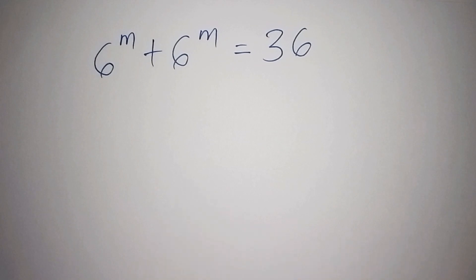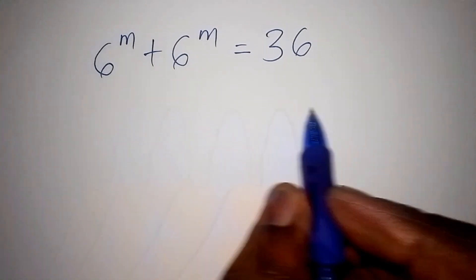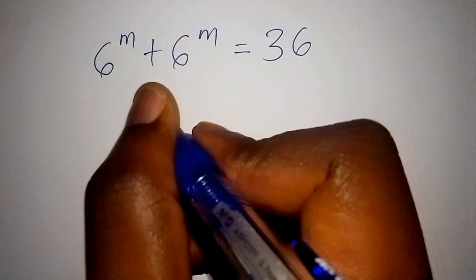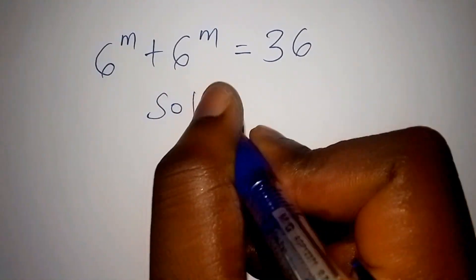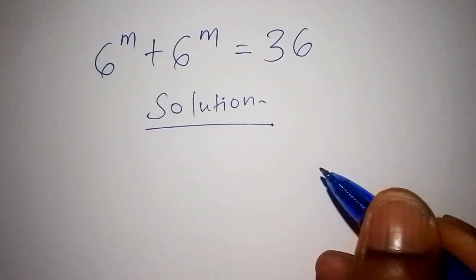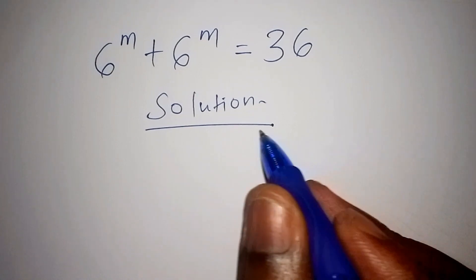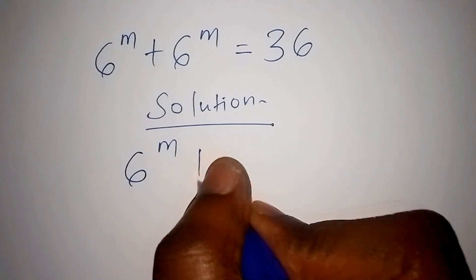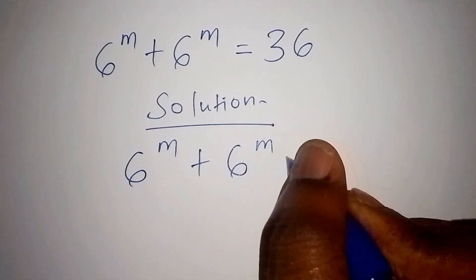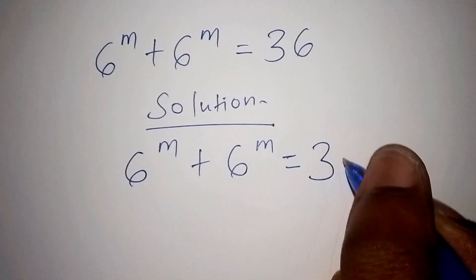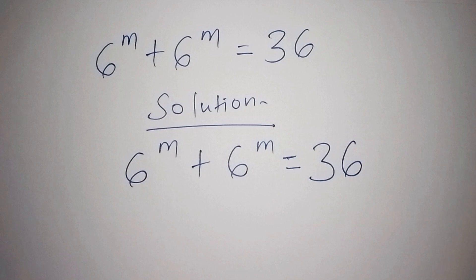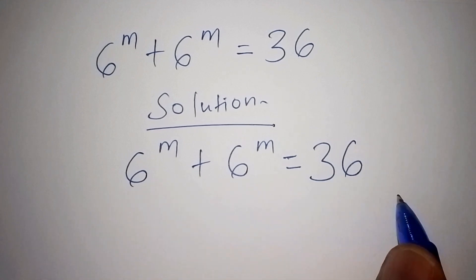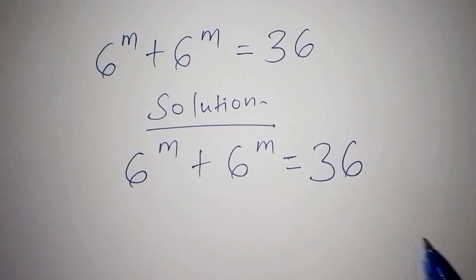Hello, welcome. We are going to work out this exponential equation. Let's start with the solution. This is what we have: 6 to the power of m plus 6 to the power of m is equals to 36. You can use this time to pause the video so that you can be able to work out this math problem and share with us the answers that you've got.